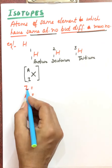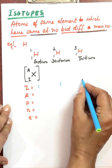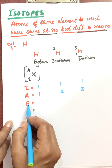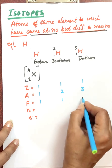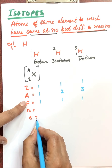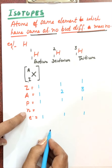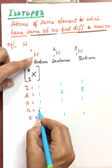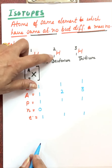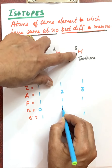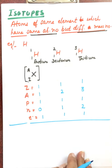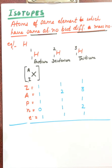The atomic number for all three hydrogen isotopes is one, while the mass numbers are one, two, and three respectively. The proton number equals the atomic number, so it is one for all three. The electron number also equals one for all three since these are neutral atoms. For neutron number, we use mass number minus atomic number: for tritium, that is three minus one, which equals two. This is how we read atomic number, mass number, proton, neutron, and electron numbers from an element's symbol.